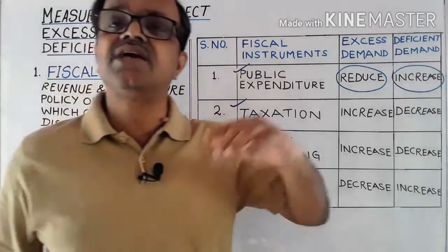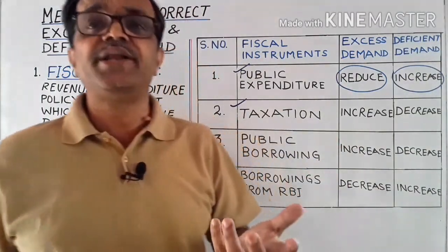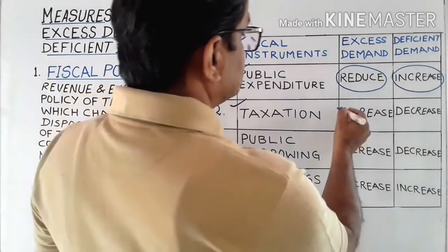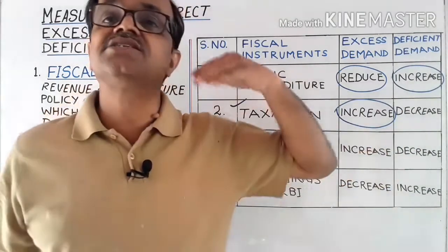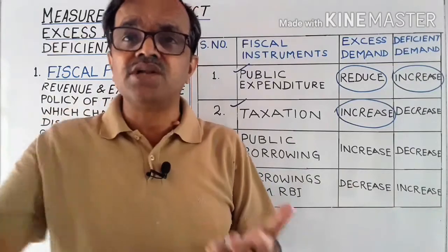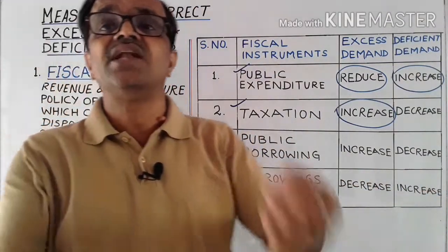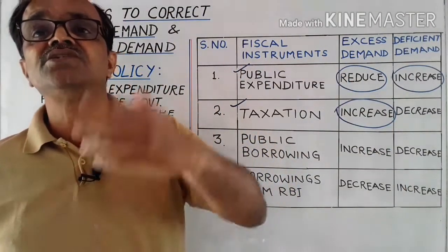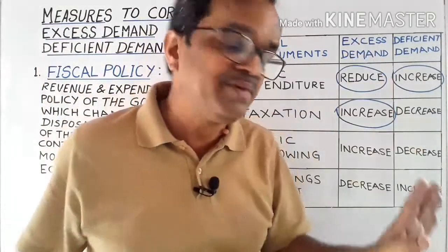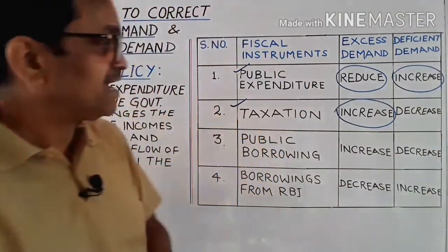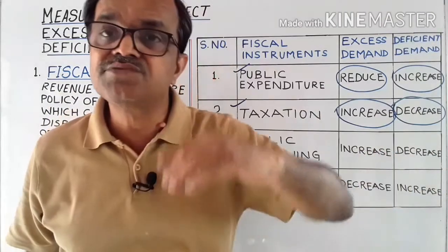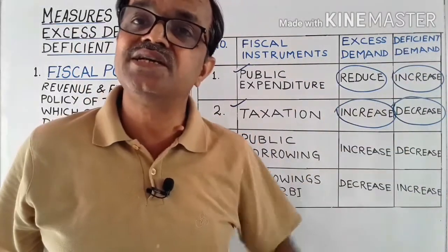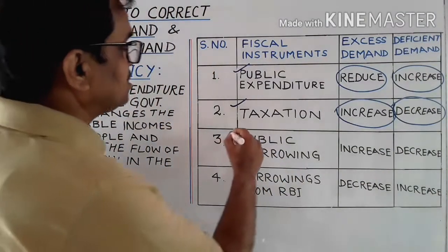The second fiscal instrument is taxation. Taxation directly decreases or increases the disposable income of the people. During excess demand, if the rate of taxation is increased, people pay more in taxes, leaving them with less money — disposable income decreases and aggregate demand falls. Reverse in the case of deficient demand: tax rate is decreased, disposable income increases, expenditure increases, and aggregate demand rises.